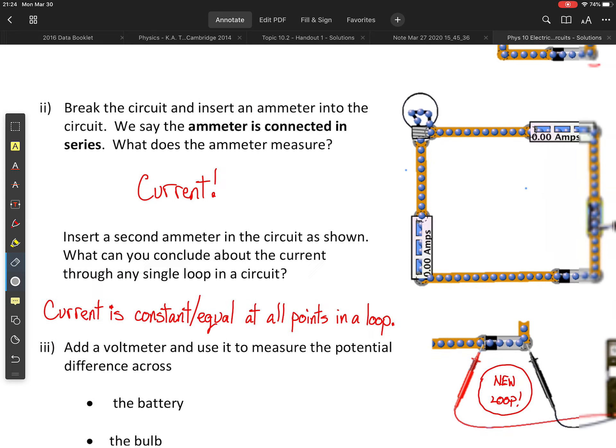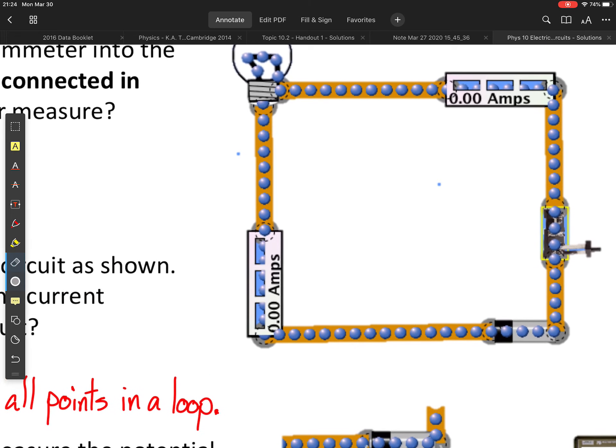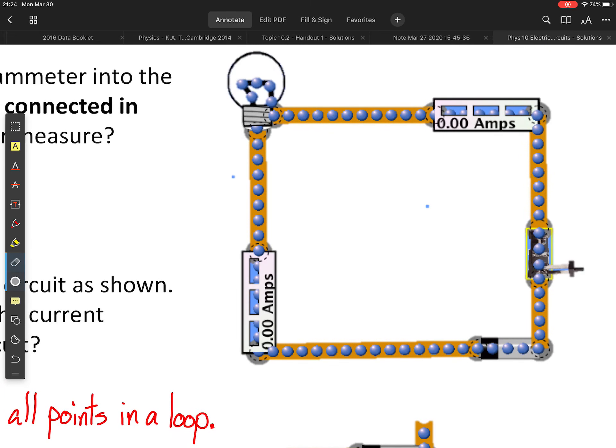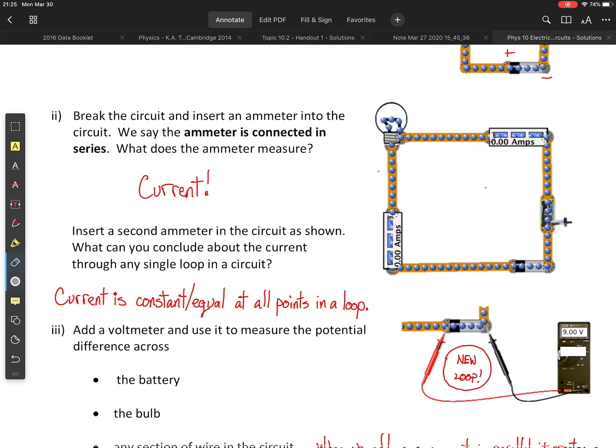Okay, when you add a second ammeter, what you're going to find is that current is constant at all points in this simple loop. Okay, so we're going to find that we have equal current no matter where you put that ammeter.